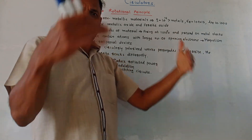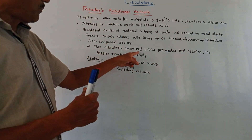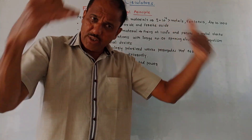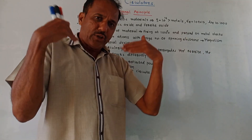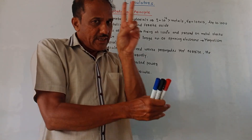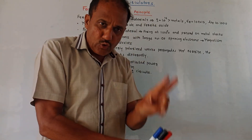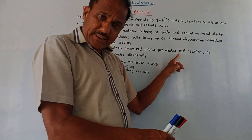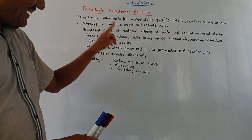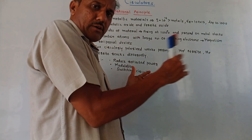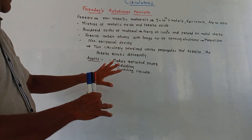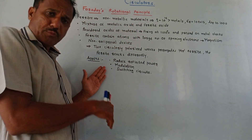There are different types of polarization; one type is circularly polarized waves. If two circularly polarized waves — one in the clockwise direction and another in the anti-clockwise direction — pass through the ferrite material, then the ferrite reacts differently for these two waves. This is the non-reciprocal characteristic of the ferrite device.